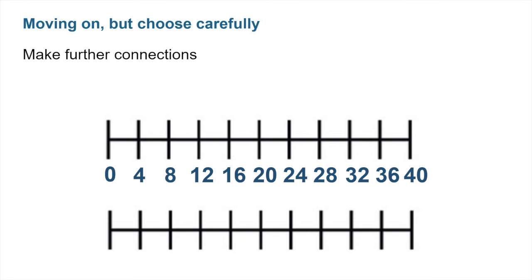As we move on, it's important to choose our examples carefully, to allow children to continue to spot patterns and make those connections and relationships between numbers. For example, we've just looked at multiples of 4. So if we move on to multiples of 8, there are lots of observations that can be made. Lots of similarities and differences.